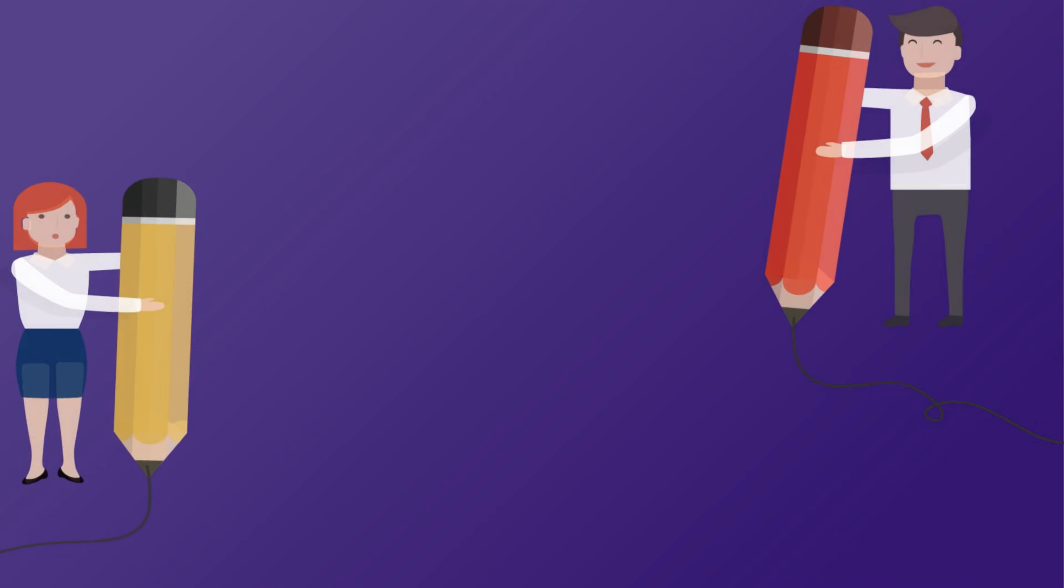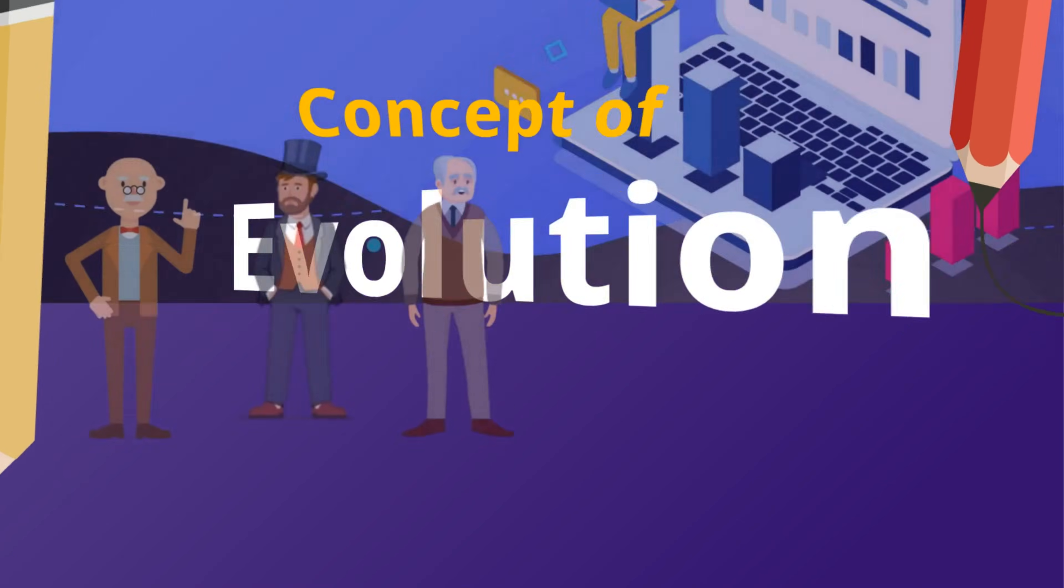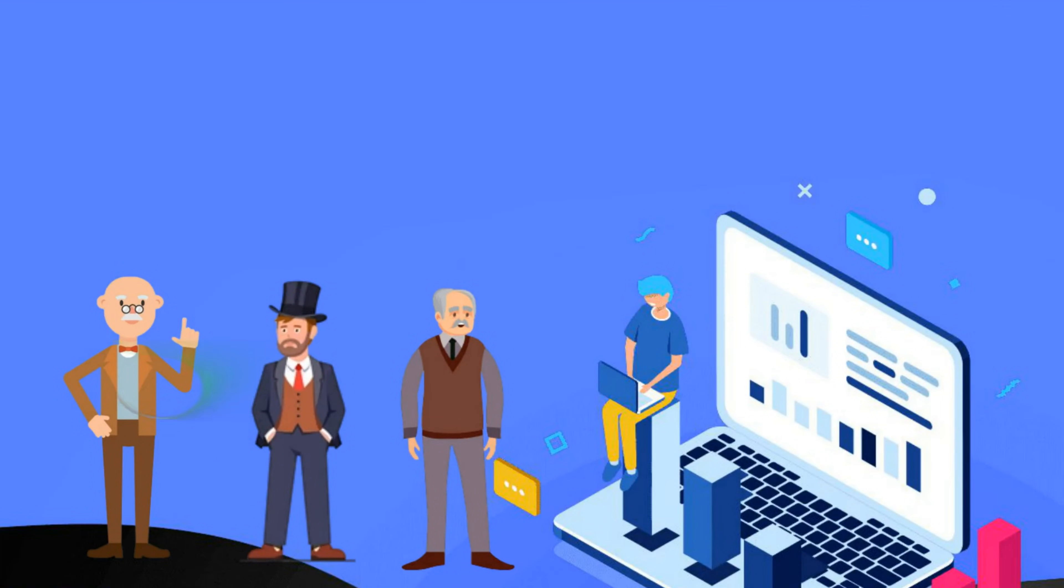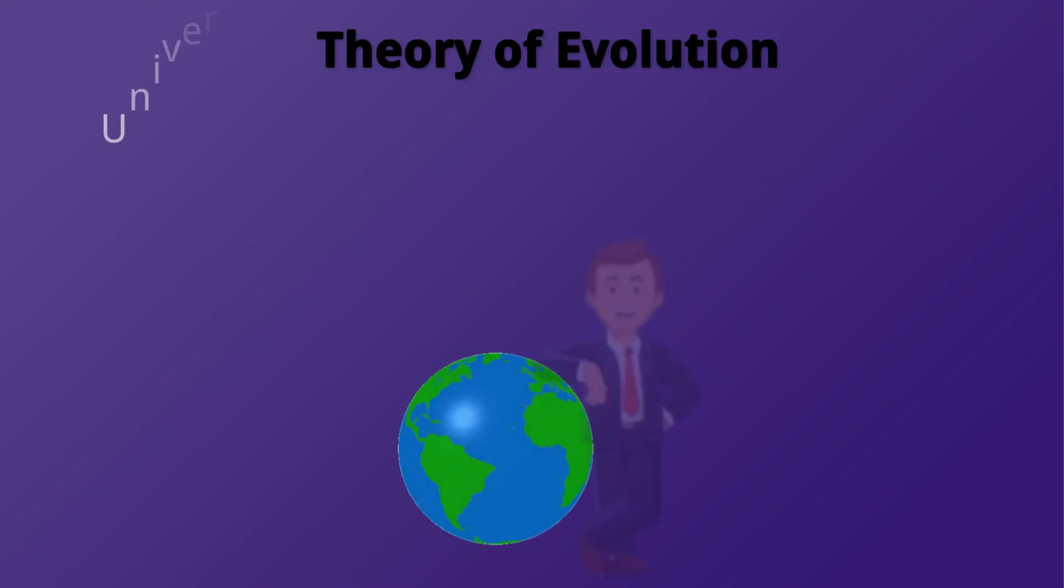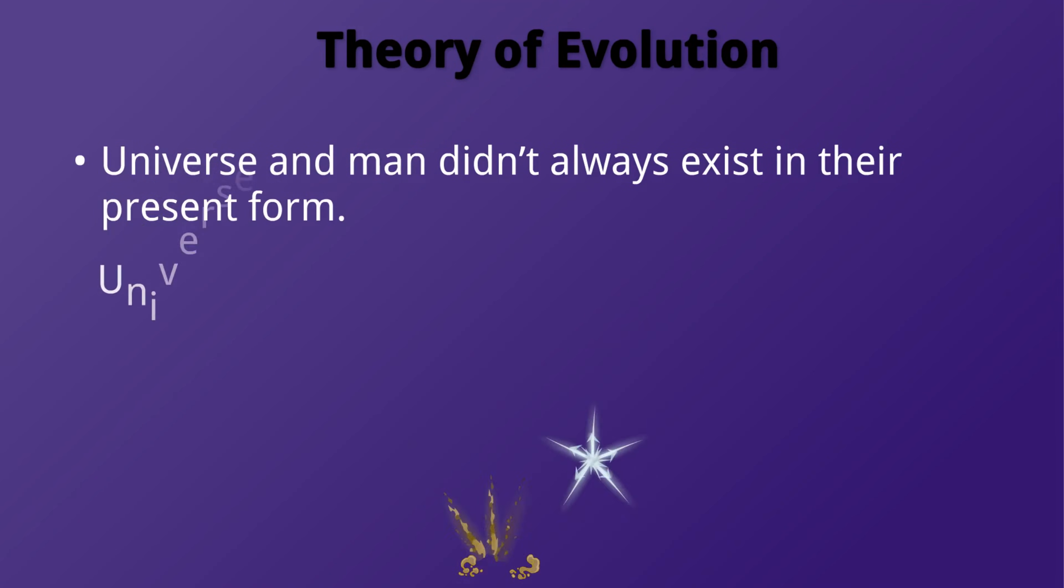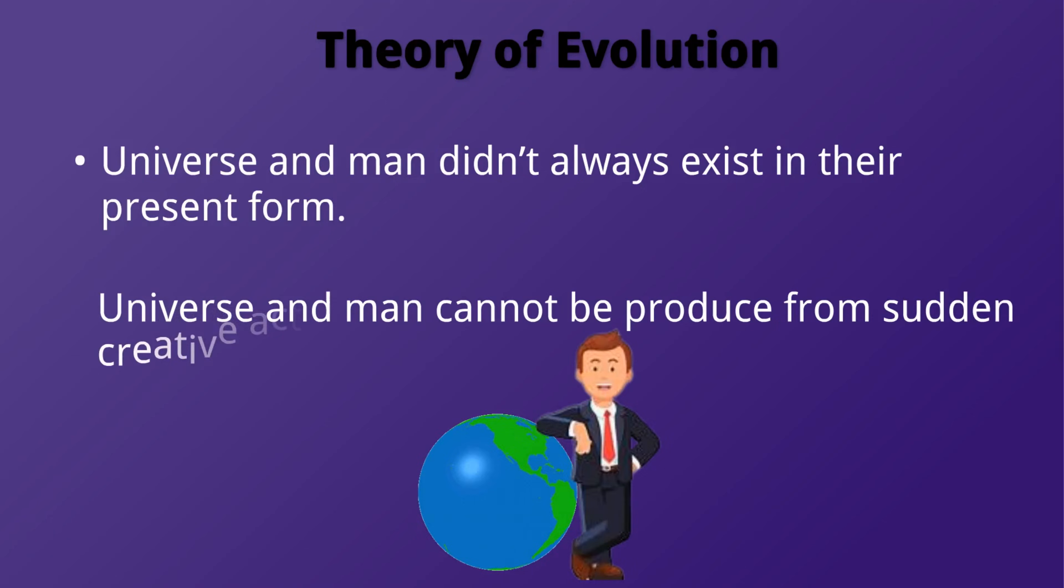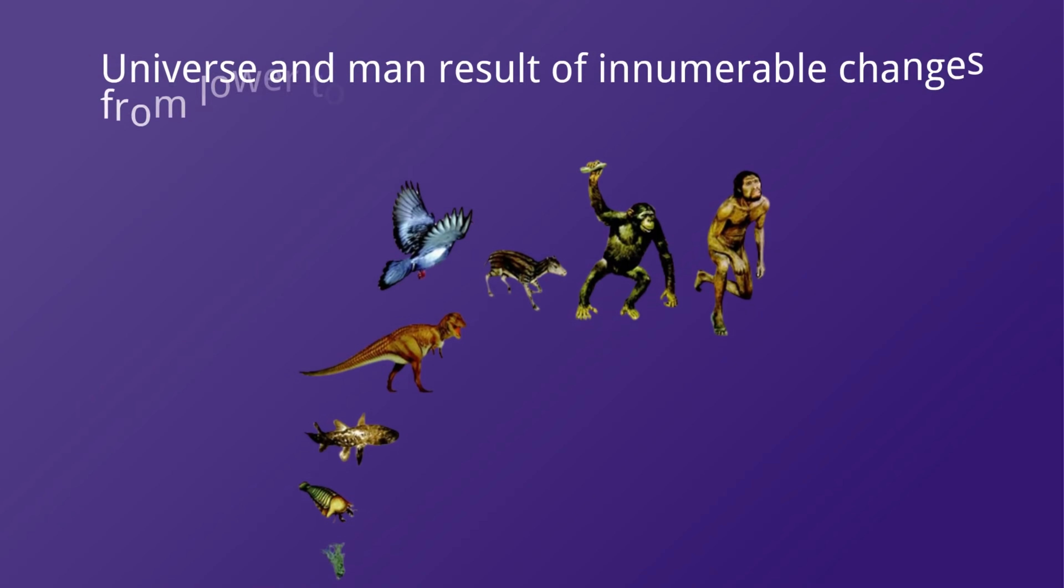Now we will explore the concept of evolution. Supporters of evolution are called evolutionists. They believe that the universe and man didn't always exist in their present form, neither are they the product of a sudden creative act, but rather the result of innumerable changes from lower to higher, each step in advance being an evolution from pre-existing conditions.